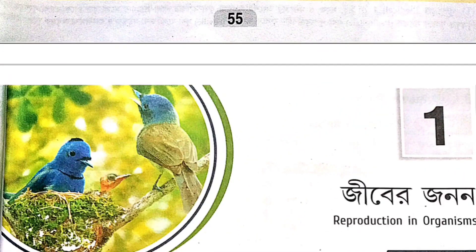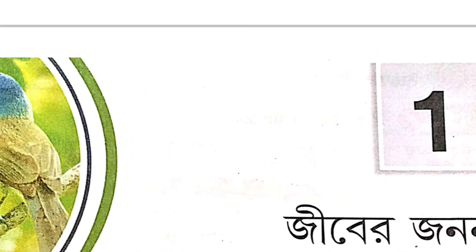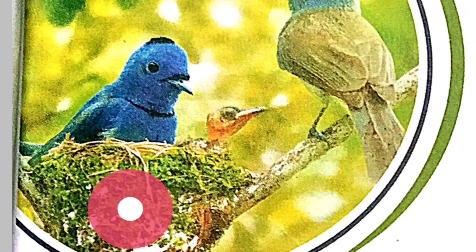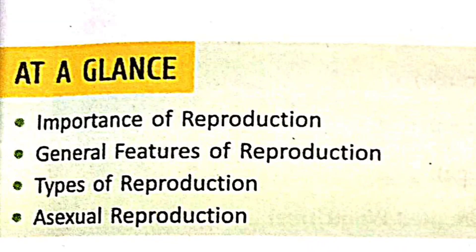Basically, Reproduction in Organisms. If you start with chapter one, you will start with Reproduction in Organisms. This is Human Reproduction in Organism System. So in the first chapter, the concept of unit one, first chapter is the importance of reproduction.